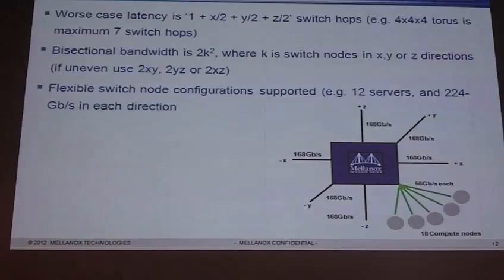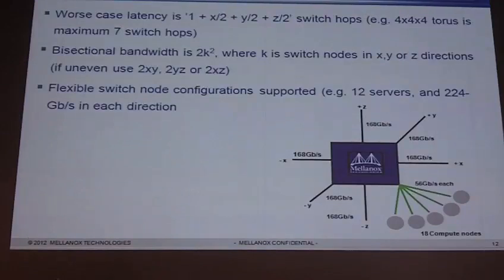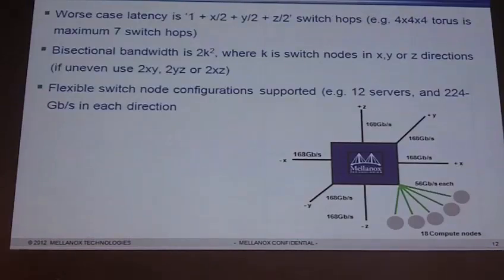Some network properties to consider when building your 3D Taurus: to calculate worst-case latency, the formula is one plus the X dimension number of nodes divided by two, plus Y dimension divided by two, plus Z dimension divided by two — that gives the worst-case switch hops from any server to any server. For example, a 4x4x4 Taurus has a maximum of seven switch hops: two plus two plus two plus one.